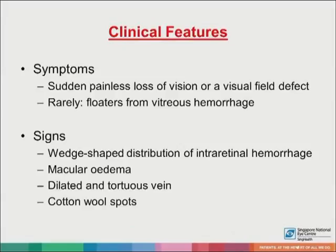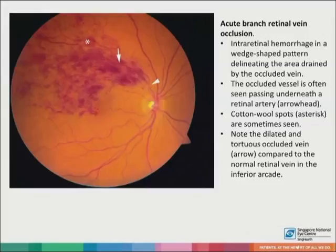Ischemic occlusion is defined as greater than a total of 5 disc diameters of non-perfusion on fluorescein angiography. The most common location for BRVO is in the superior temporal quadrant. Other signs include macular edema, dilated and tortuous veins, as well as cotton wool spots. This is a fundus photograph of a patient with acute BRVO. Intraretinal hemorrhage can be seen in a wedge-shaped pattern that delineates the area drained by the occluded vein. The occluded vessel is often seen passing underneath a retinal artery, as shown by the arrowhead. Cotton wool spots are sometimes seen, and also note the dilated and tortuous occluded vessel, shown by the arrow, compared to the normal retinal vein in the inferior arcade.